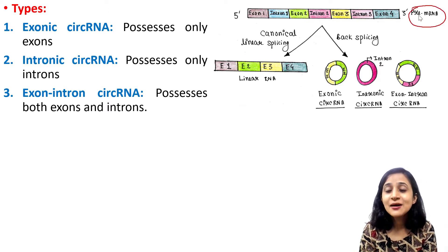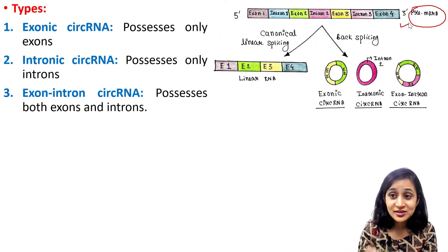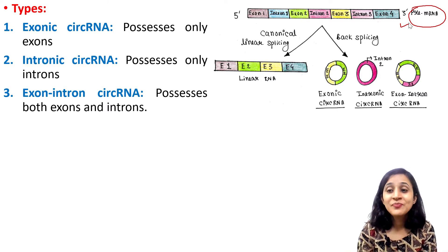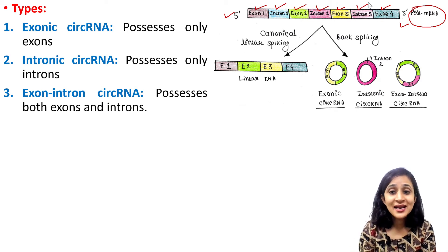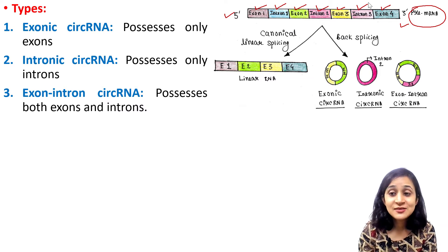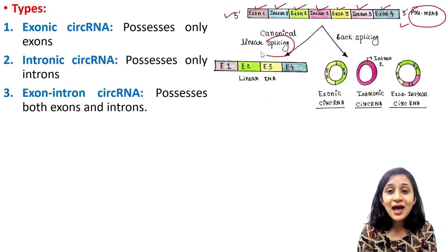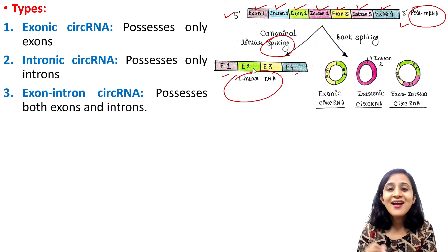So, this is the pre-mRNA that is just transcribed from DNA. It has the 5' and 3' end and contains four exons here: exon 1, exon 2, exon 3, and exon 4, and in between three introns: intron 1, intron 2, and intron 3. So this is just the pre-mRNA, it is yet to be processed. Now, after the splicing, the introns are removed and exons are joined here to produce the linear RNA. So this is basically canonical linear splicing.